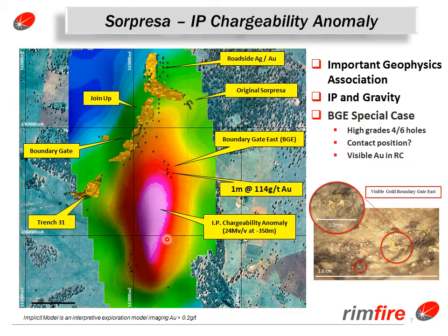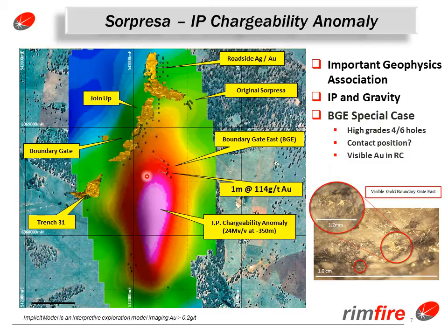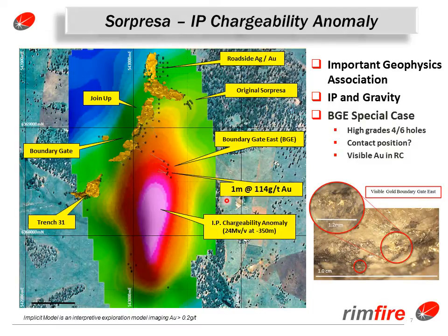This slide shows the Supraza mineralisation and the IP or induced polarisation chargeability anomaly as outlined here. We have a chargeability high which appears spatially related to the Supraza mineralisation area and is particularly interesting in terms of its location with the boundary gate east drilling. In this location, four out of the six holes achieved a high grade of gold at double digits or better, including one metre at 114 gram gold. One of the holes also showed in RC chip visible coarse gold. This area is particularly interesting because the IP geophysics is also reinforced by the gravity geophysics at this location.